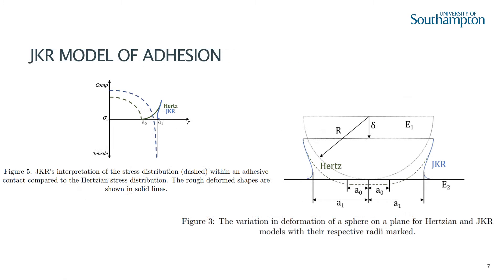Following on from experimentation conducted by his co-workers, Johnson — the J in JKR — formulated a theory of adhesion akin to that proposed in the early 20th century for fracture mechanics. They considered the force required to separate two surfaces already in contact, using the assumption that the only form of adhesion between the two bodies occurred within the contact area. This model required the bodies to be large and soft in order for the length of deformation to dwarf the range over which the adhesive interactions decayed.